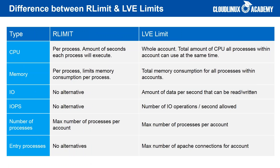Apache's memory limit means limiting memory consumption per process — if you have 100 processes, they can take 100 multiplied by the limit set. LVE's memory limit is the total memory consumption for all processes within the account, so the total memory an account can consume does not depend on the number of processes. IO, IOPS, and entry process limits have no alternatives in Apache limits. The number of processes limit is similar: the maximum number of processes allowed per account — however, LVE counts all processes, not only those launched by Apache.